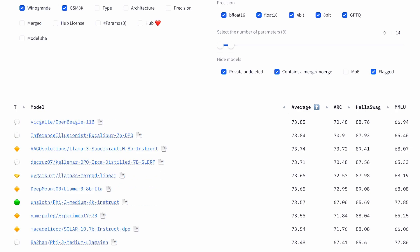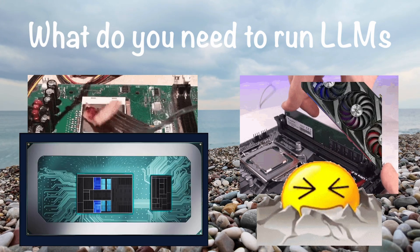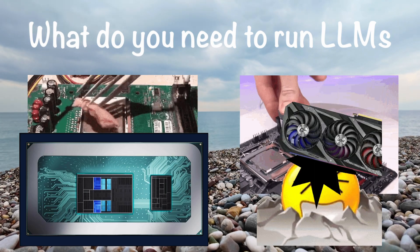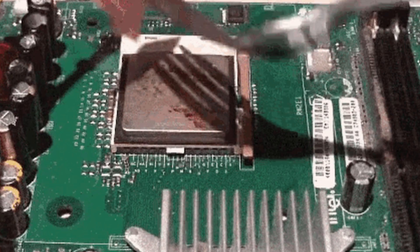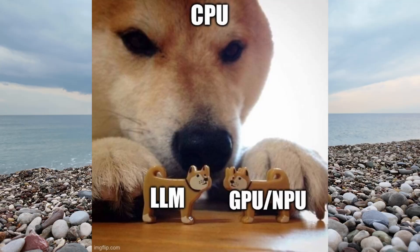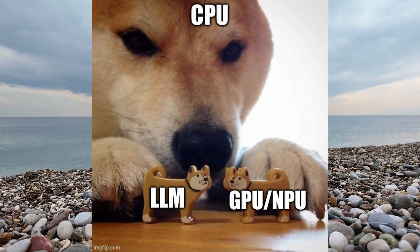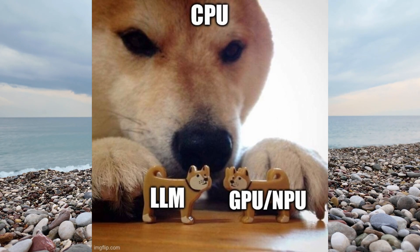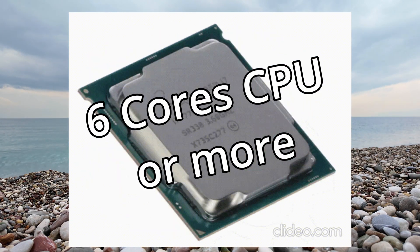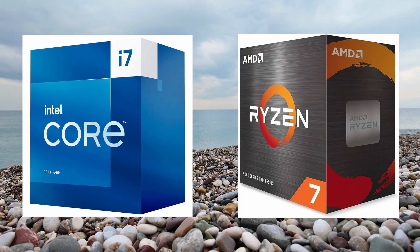We'll be covering three things a computer needs to run LLMs: a CPU, RAM, and either a GPU or an NPU. I'll explain the differences between them in a bit. But first, let's talk about the CPU. The CPU is necessary, but not that critical. It's used for pre-processing when your LLMs start and for coordinating the flow of LLM data between system RAM and GPU VRAM. You should generally aim to get the latest CPU with six cores or more — typically an i7, Ryzen 7, or above should work for you.